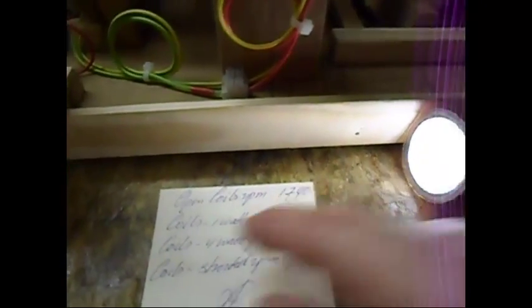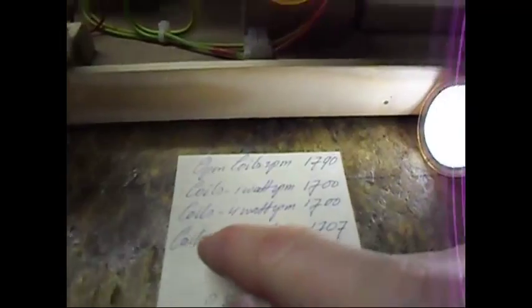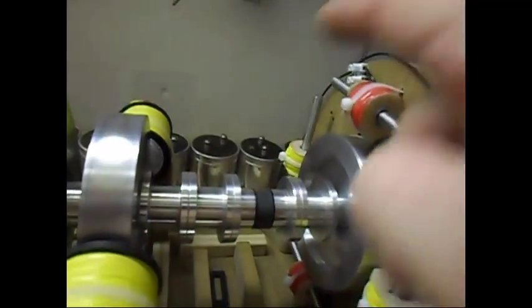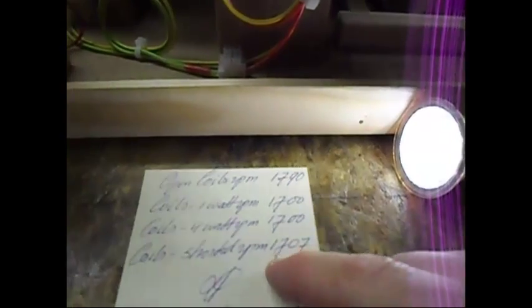I also did a test with 4 watts, which is 4 of these. It stayed the same at 700. And when I short the coils, all those coils are in series. When I shorted it, it went to 770, just slightly above the loaded RPM.